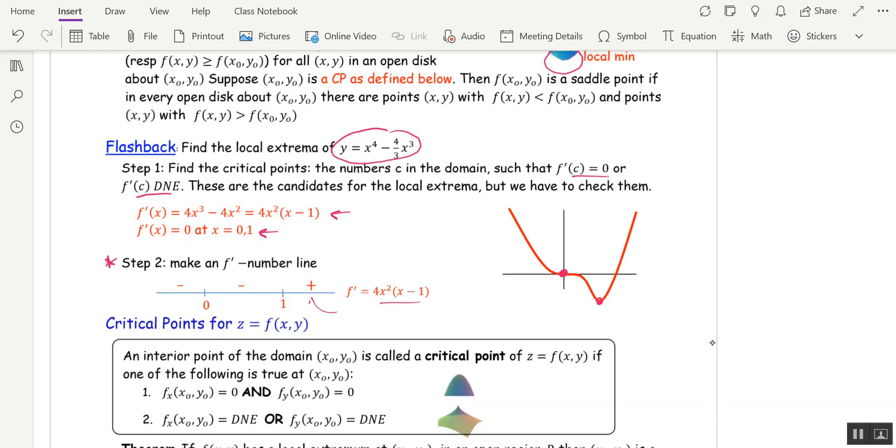So I have to take a test point from each sub-interval. For example, for this last interval, I might take x equal 2. For the middle one, I might take x equal a half. And for the first interval, I might take x equal negative 1.